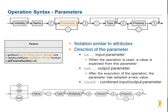After the direction of the parameter, you specify the name of the parameter type. If you want to specify an optional type, you need a colon in front of it. Afterwards, you can model the optional multiplicity and, last but not least, put the optional properties in between swung brackets separated by a comma.